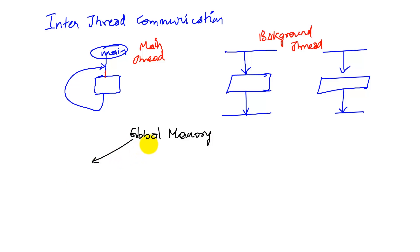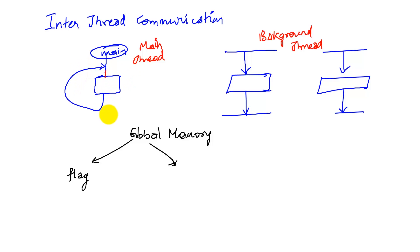The first example involves communicating between the background and foreground using a simple flag. A flag like this could involve the main program waiting for some event to occur, and the background thread signals the main program that this event has occurred by raising a flag.